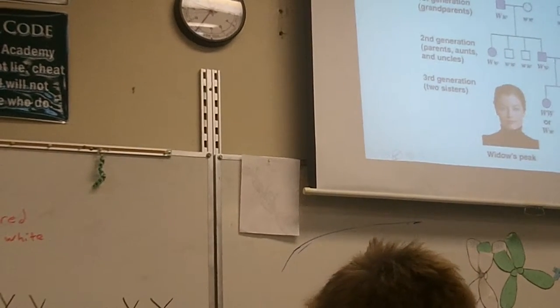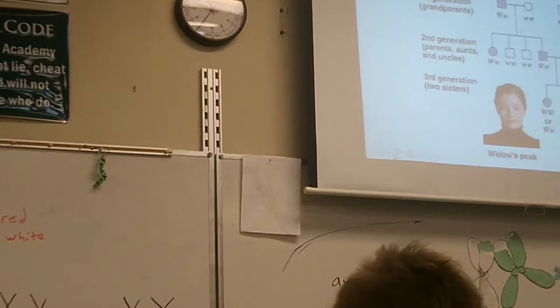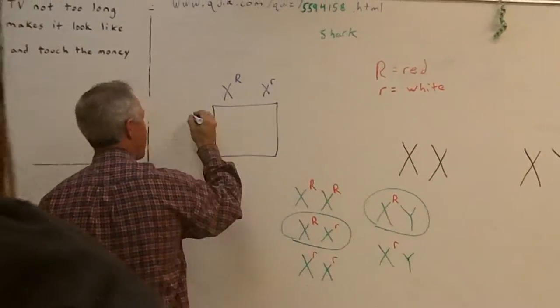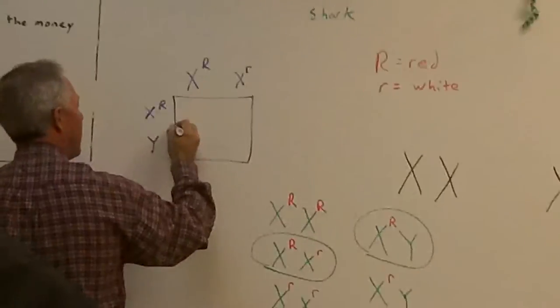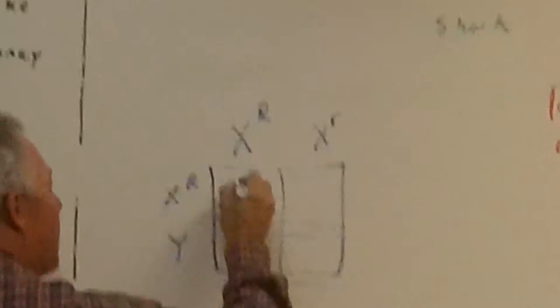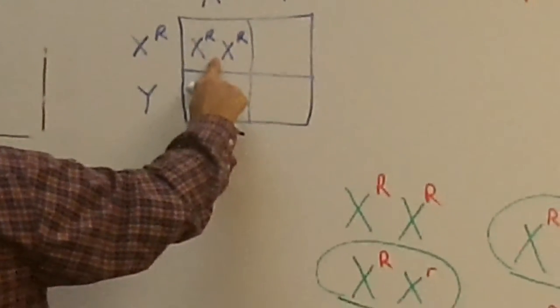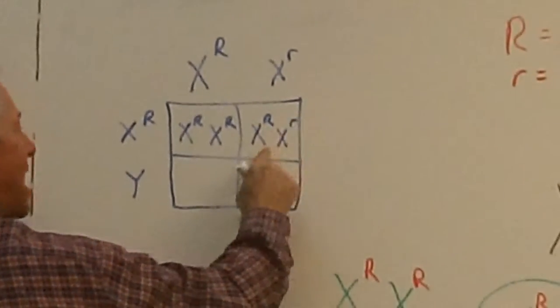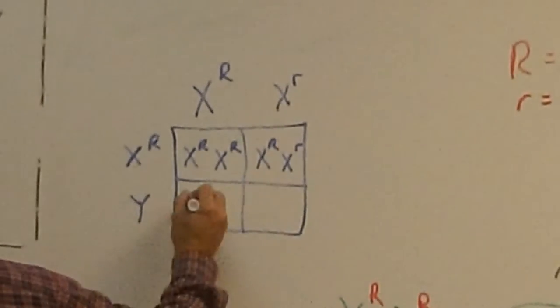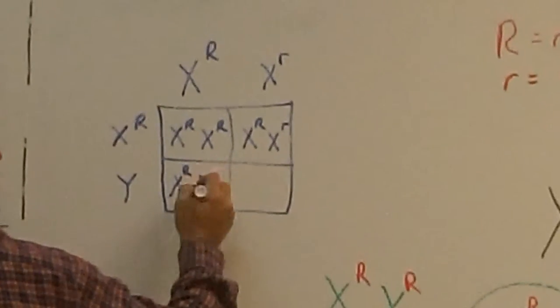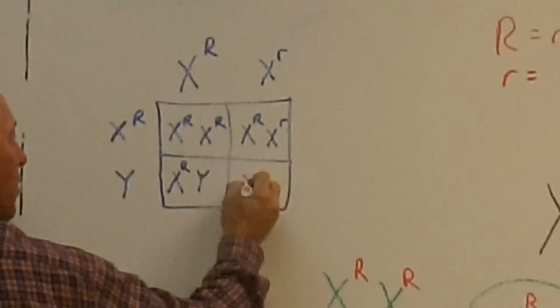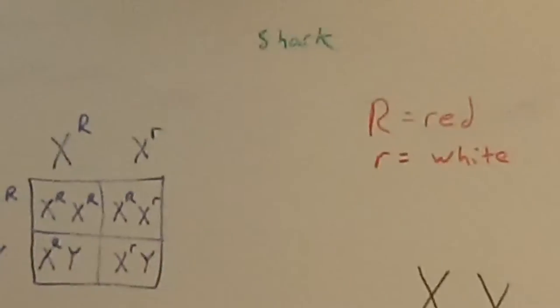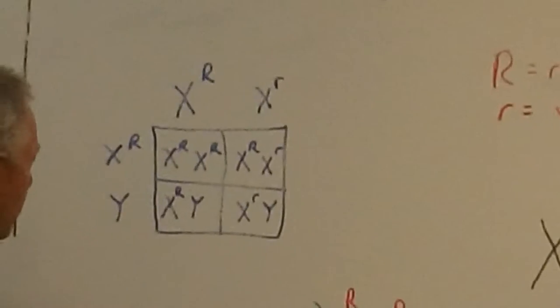So, we have that female, X big R, X little r, and she mates with a male that's X big R, Y. And they have baby flies. And that's a red-eyed female. And that's a red-eyed female. And that's a red-eyed male. And that's a white-eyed male. Isn't that interesting?